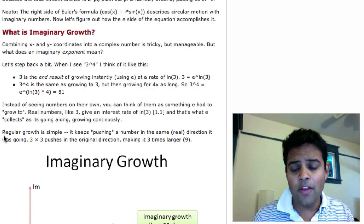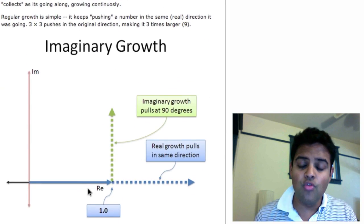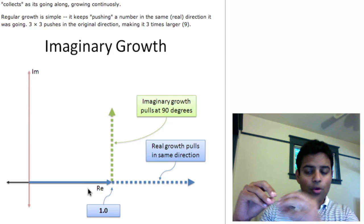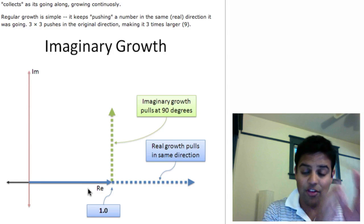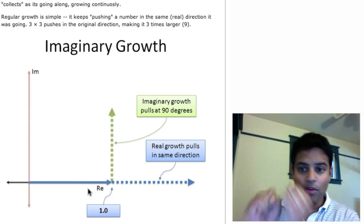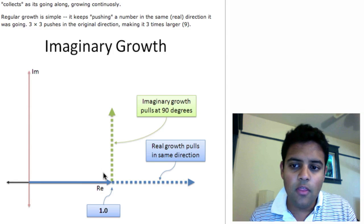The next idea is to imagine what imaginary growth means. And this is kind of tricky, but real growth, I always imagine it as pulling my number across. So I have one, two, four, eight, sixteen, thirty-two. It's increasing, it's increasing, it's being pulled, and each pull is making it go faster and faster.